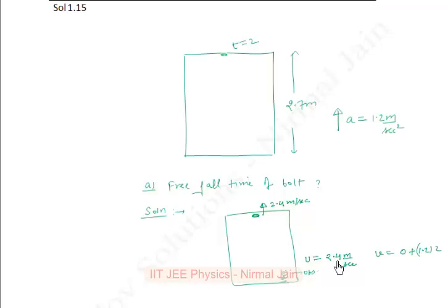So at t equals 2 seconds, this is the velocity of lift in upward direction. This is the velocity of bolt at t equals 2 seconds. It's having one more thing which is acceleration of 1.2.